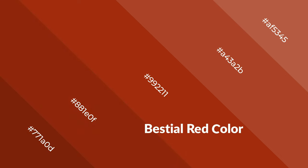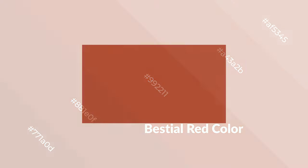Warm colors are symbols of warmth, fire, heat, and sunshine. Bestial red also evokes joy, passion, love, and even anger. You can see these colors used in restaurants and gyms.